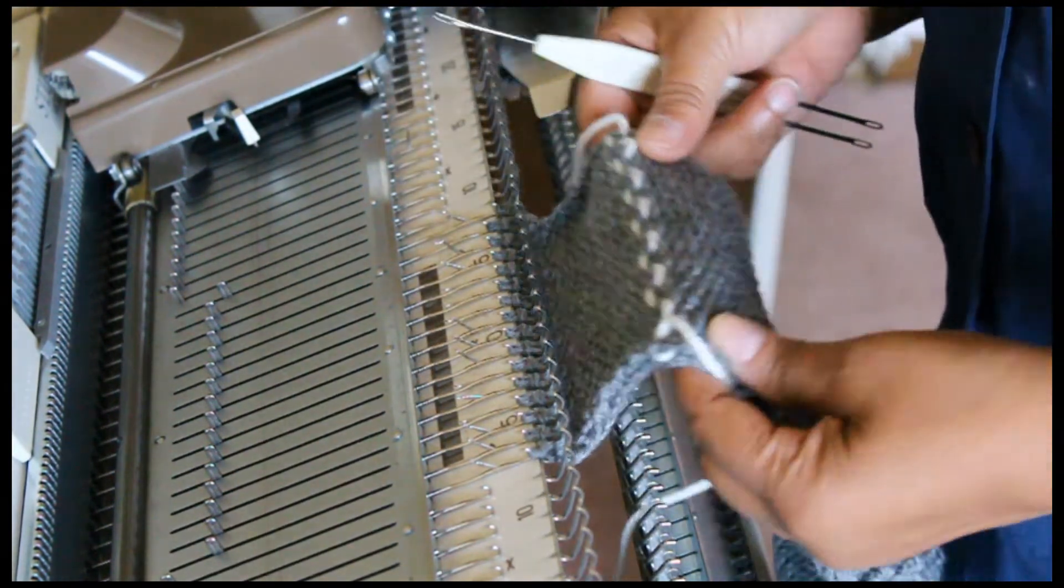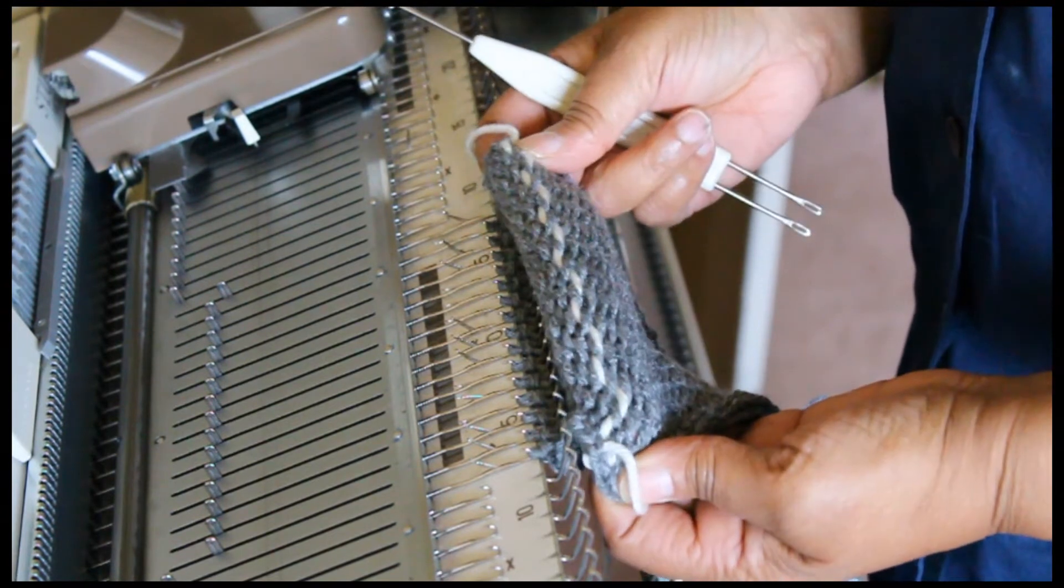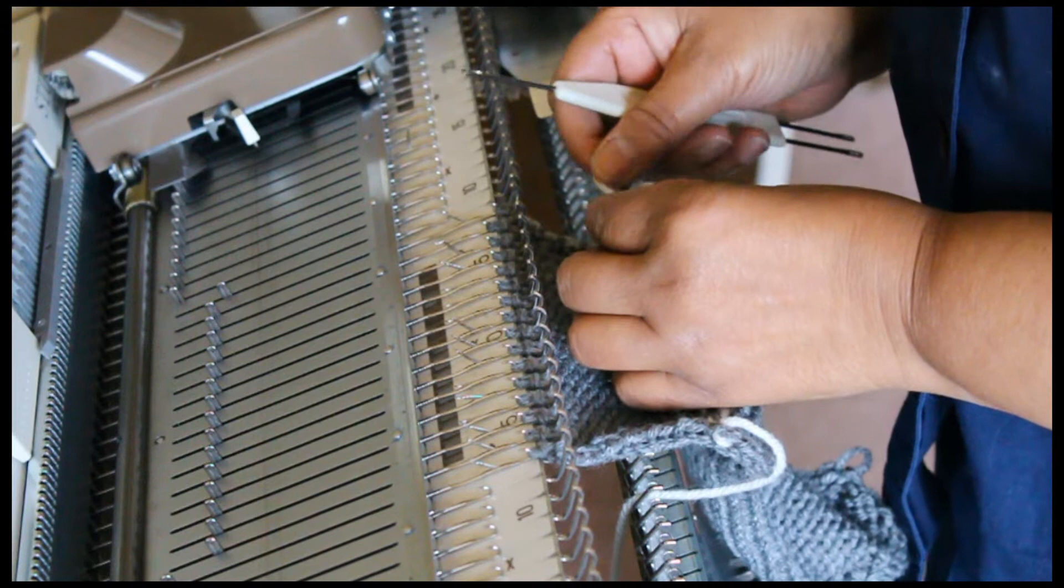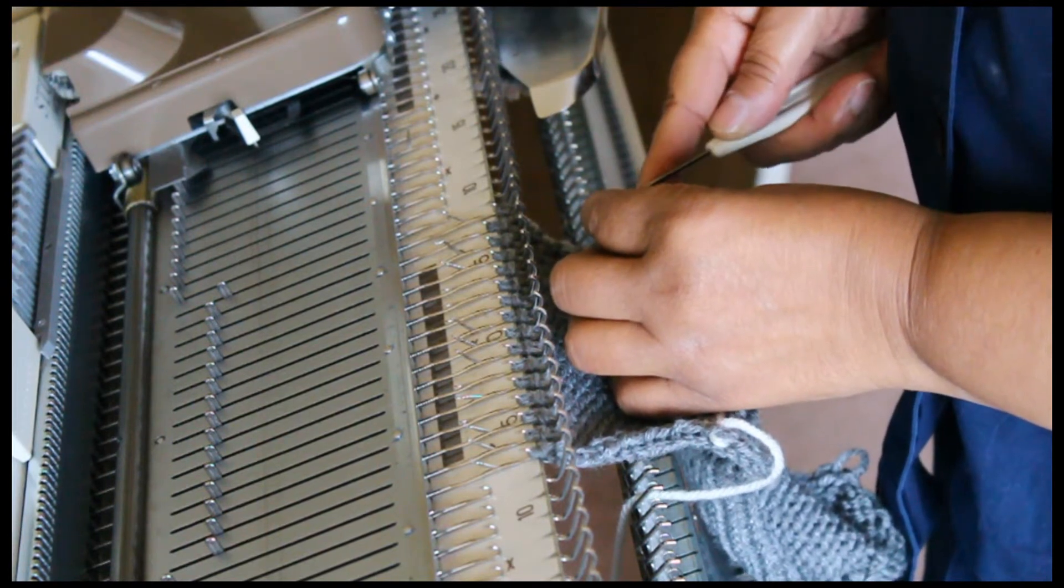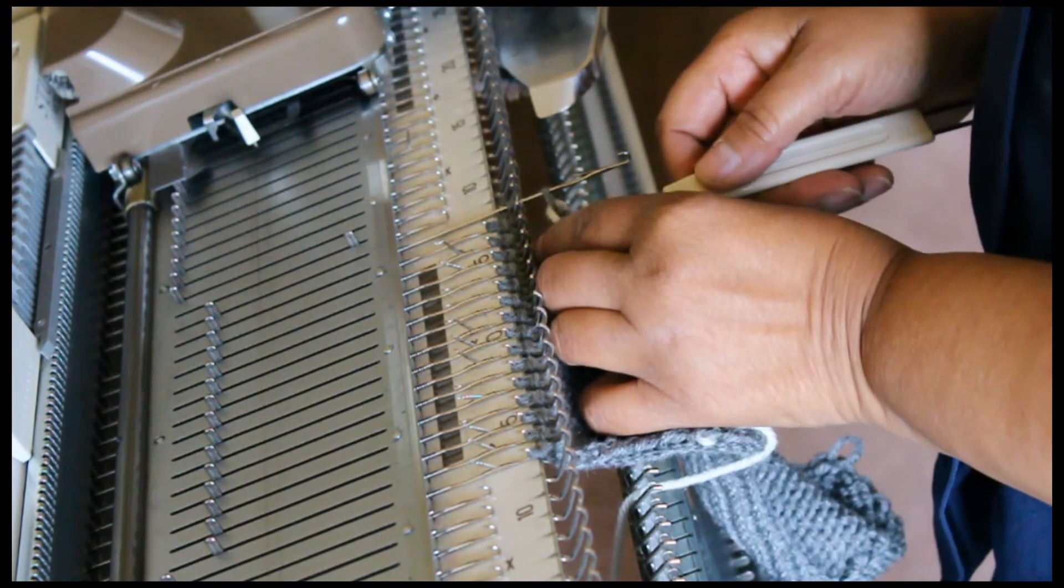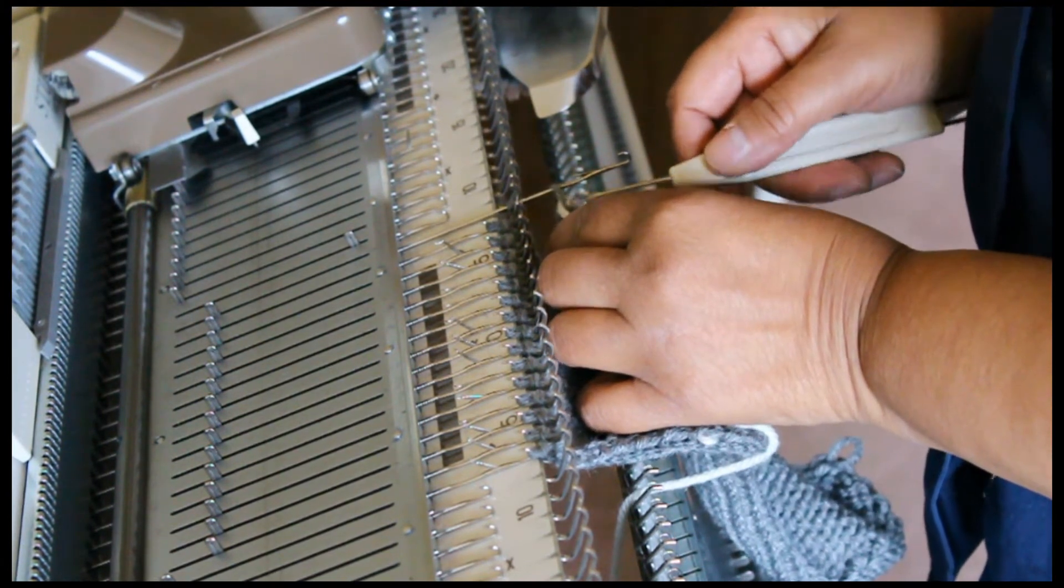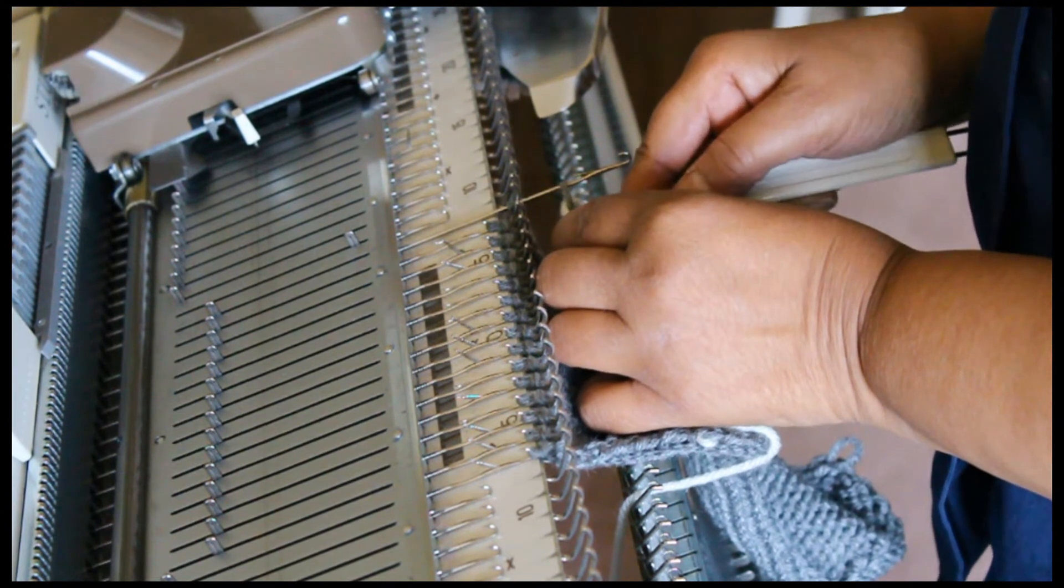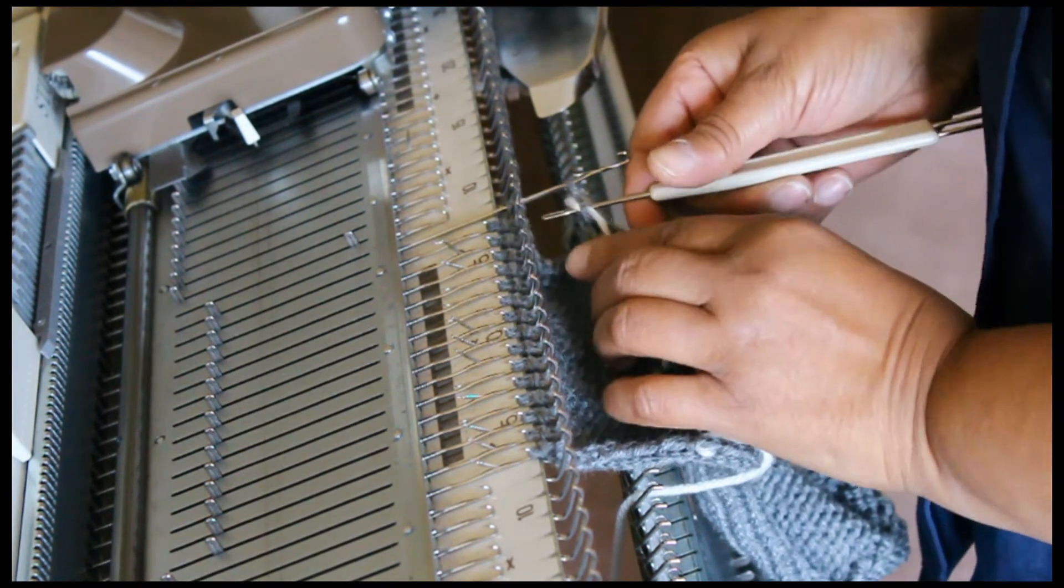Use your tool to pick up stitches where the contrasting yarn is located and place that stitch on the needle. Push the needle out to D position. We're going to repeat this and place a stitch on every other needle.